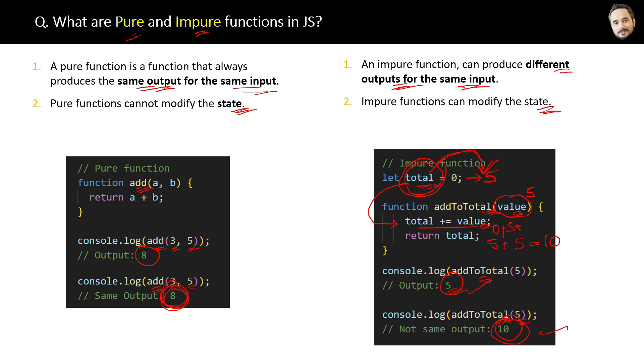The next difference is pure functions cannot have side effects, whereas impure functions can have side effects. What are side effects? Side effects are like any external changes made by the function. For example, in this example, the impure function addToTotal method, the external variable total value has been modified to something else.